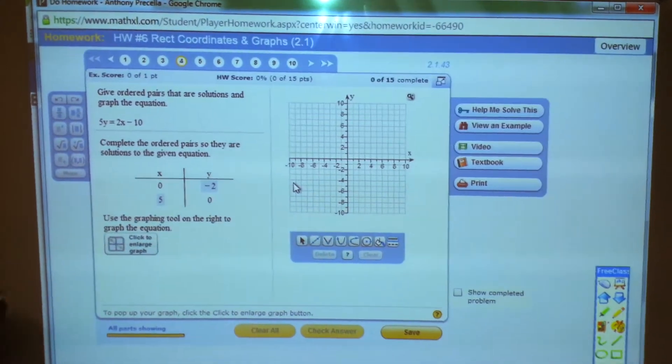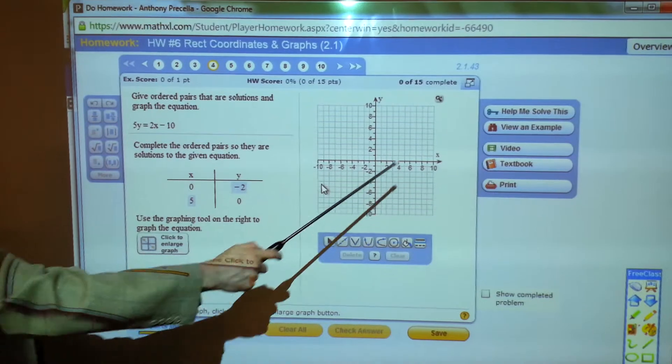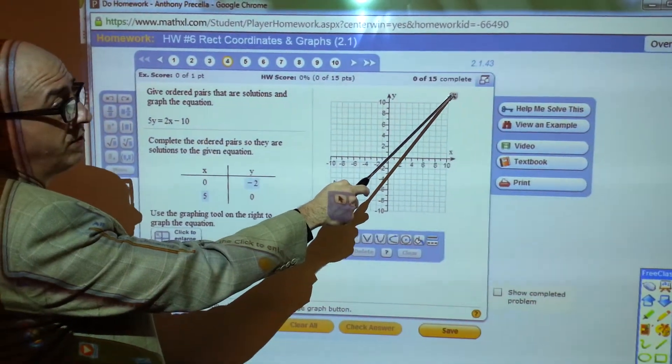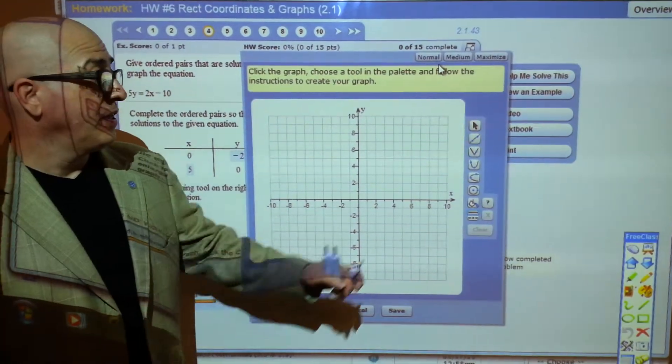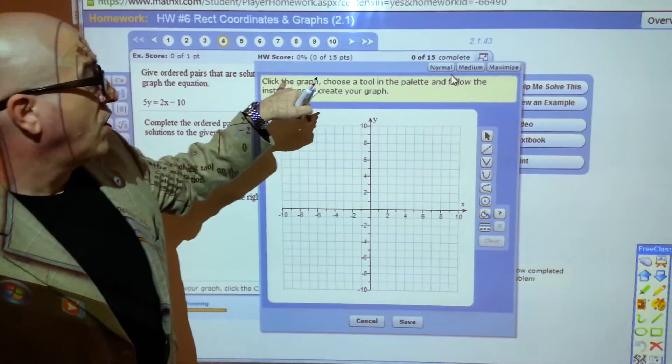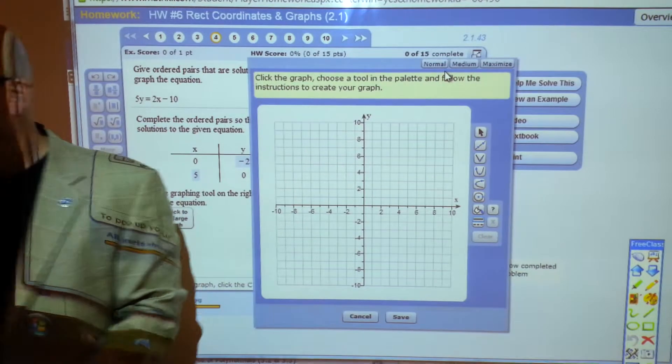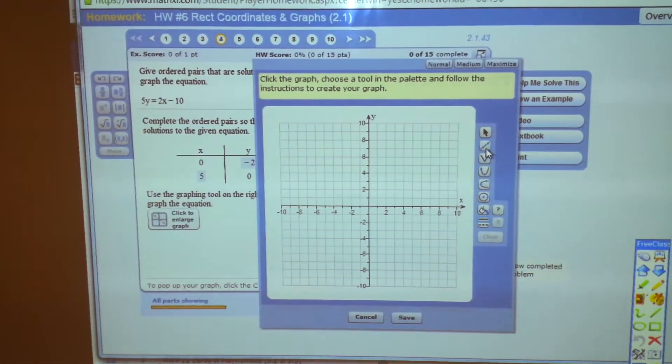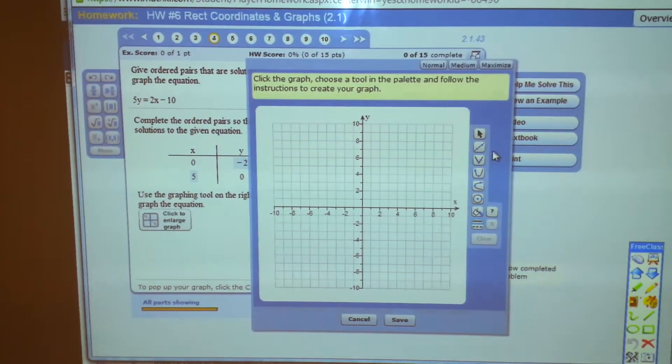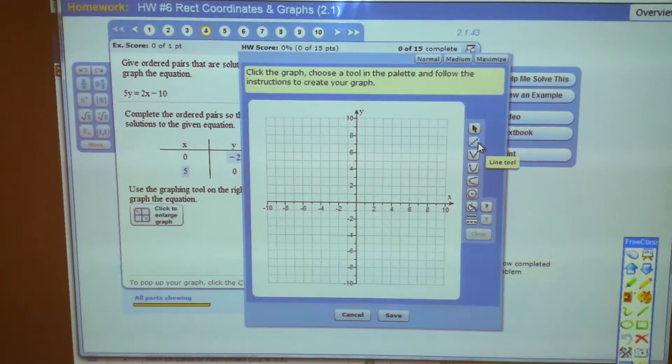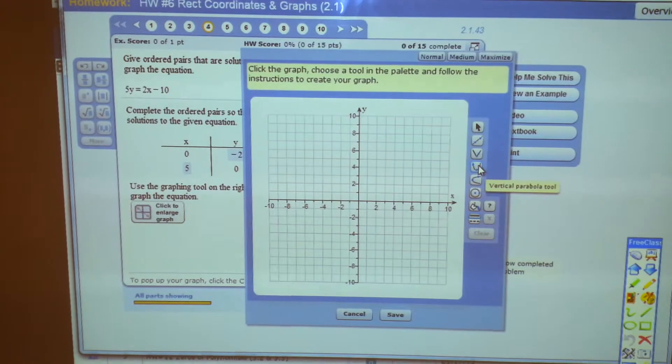And now we're going to graph using the graphing tool. I think it's best to blow up the graph clicking right here. And then you have all the different tools over here. This talks you through it. Click the tool you're going to use first. If you hover your mouse over each tool it will tell you, look right here, the line tool, absolute value tool, vertical parabola tool. Well we have a line so you click on line.